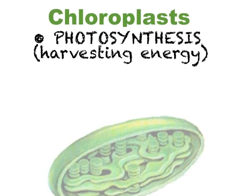The main function of chloroplasts is photosynthesis. 99% of energy on earth comes from the sun, but the energy is not available to many organisms. For example, as animals, we can't eat sunlight and survive. However, plants can harvest the energy and convert it to an edible form so that other organisms like us can utilize the energy from the sun. This process is called photosynthesis and takes place in chloroplasts.